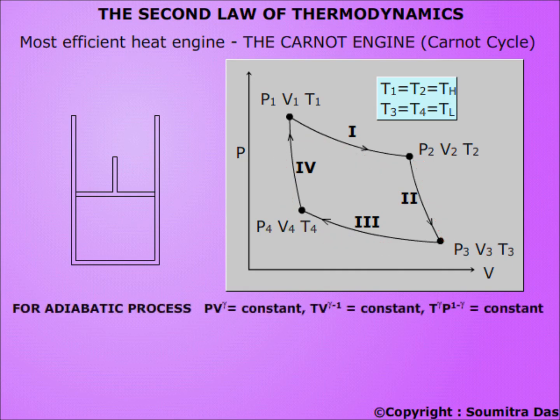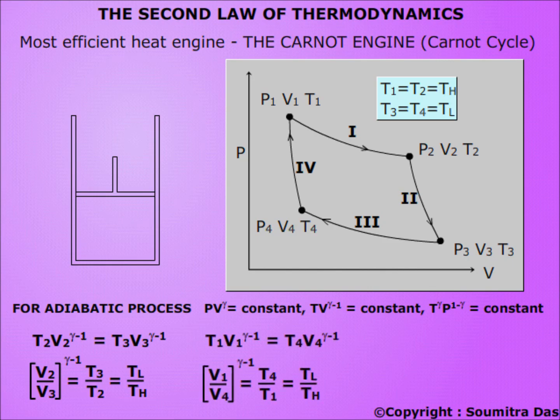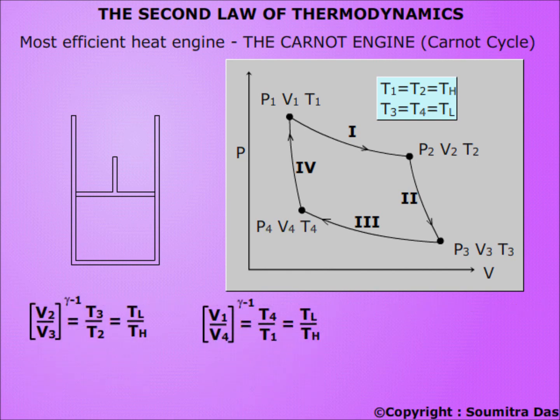For the adiabatic process: T2 · V2^(γ−1) = T3 · V3^(γ−1), which implies V2/V3^(γ−1) = T3/T2 = TL/TH. Similarly, V1/V4^(γ−1) = TL/TH. Therefore, V2/V3 = V1/V4, which implies V2/V1 = V3/V4.